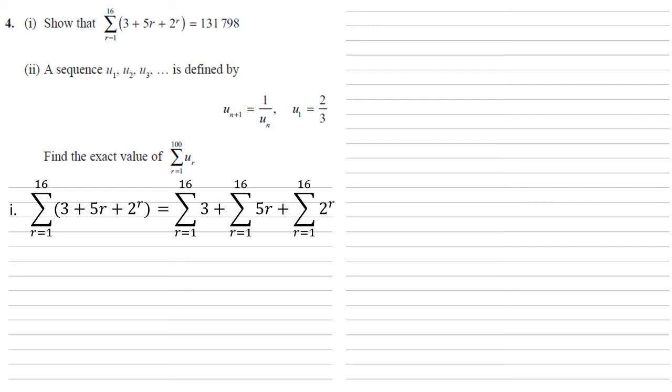We can now do the sum from 1 to 16 of 3. There's no r in this, so it's just going to be 3 16 times, which is 48.